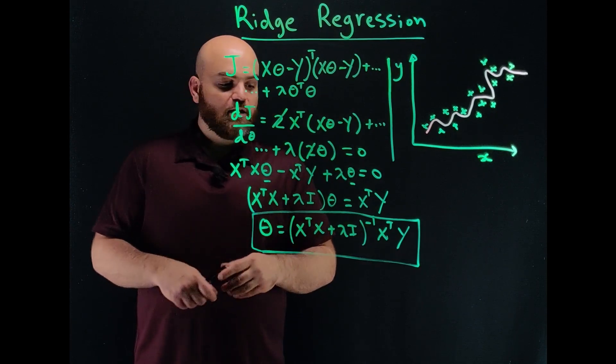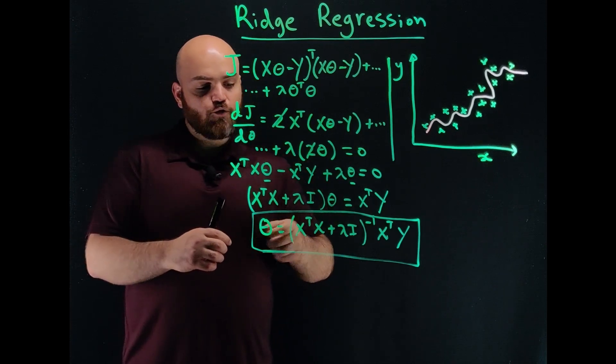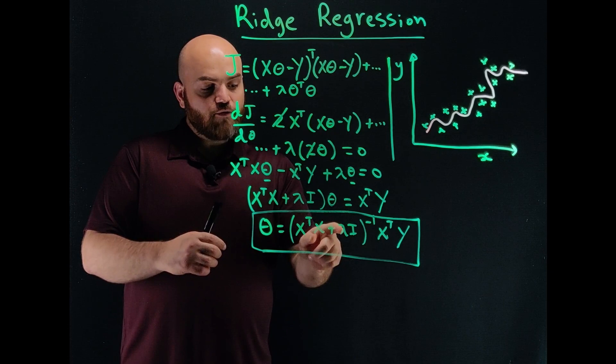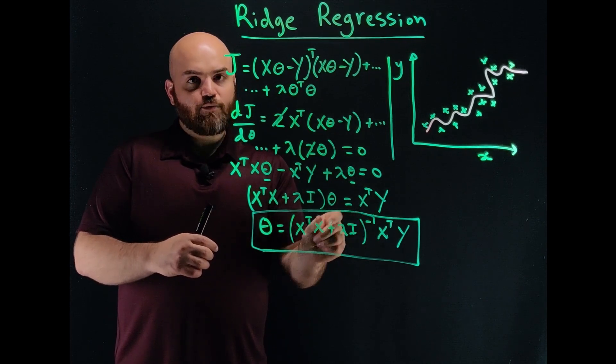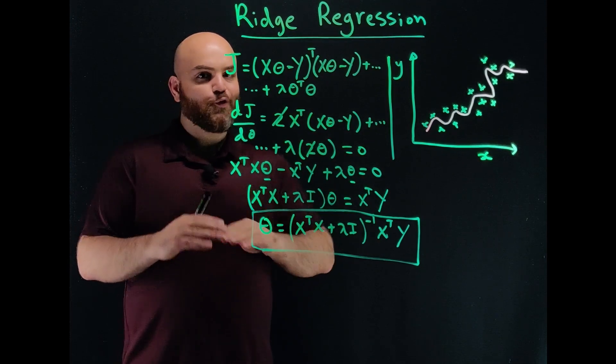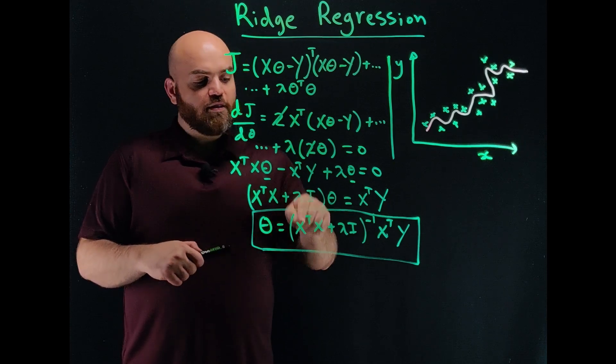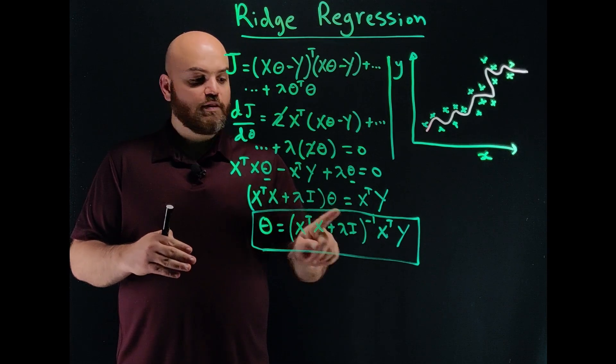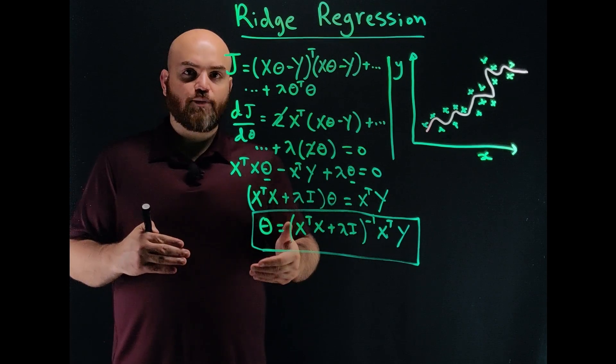Now what's interesting here, this lambda number right here, what you can think about it is it's a way to change the singular values of this X transpose X matrix. So the larger it gets, the smaller it gets. Now I would recommend it being a positive number between 0 and 1. Don't go above 1, that's never a good idea. But also, another thing to note is if you set lambda equal to 0, this term goes away, and you're essentially solving an ordinary least squares problem.